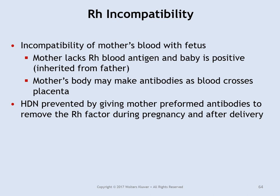Rh incompatibility occurs when mom is Rh negative — lacking the Rh protein on her red blood cells — while the baby is Rh positive. Mom's immune system will make antibodies against the Rh positive blood. Those antibodies can cross the placenta and enter the baby's bloodstream. Usually the concern is not with the first baby, because maternal and fetal blood typically don't mix until delivery. The real concern is with any subsequent Rh-positive pregnancies, so it's essential to know mom's blood type.